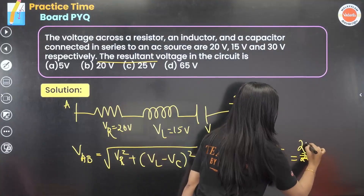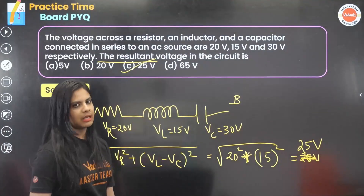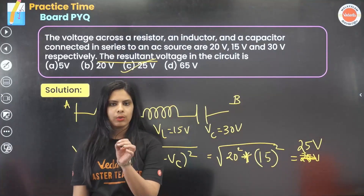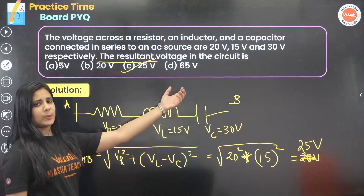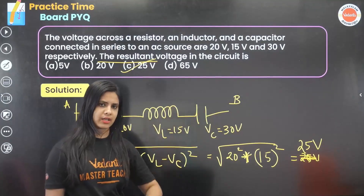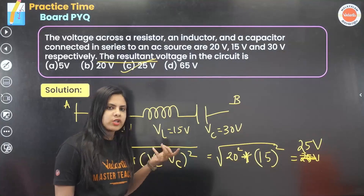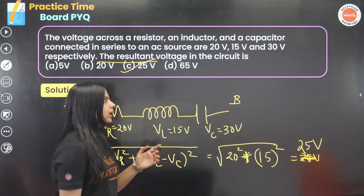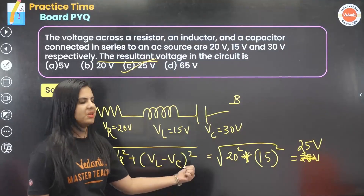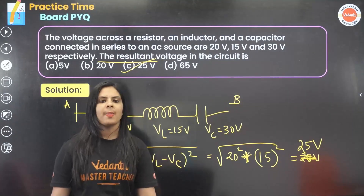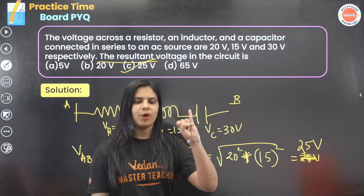That gives us 25 volts. So option C is the right answer. For a series RLC circuit with those potential differences, the resultant voltage works out to 25 volts.